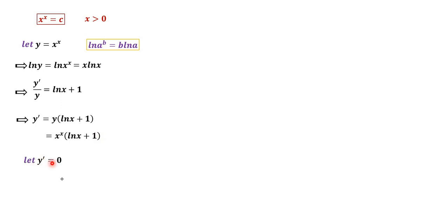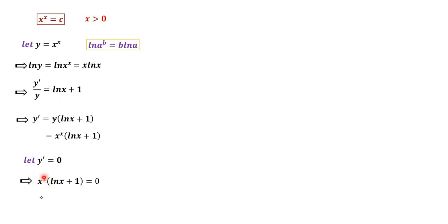Setting y prime equal to 0, we get x^x times (ln x + 1) equals 0. Since x is positive, x^x is positive, so the only solution is ln x + 1 equal to 0. Then we have x equal to 1 over e.